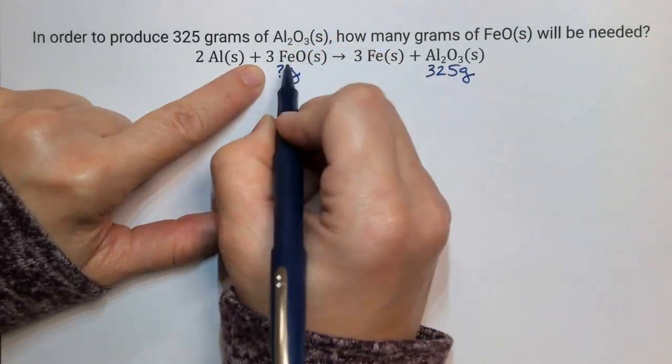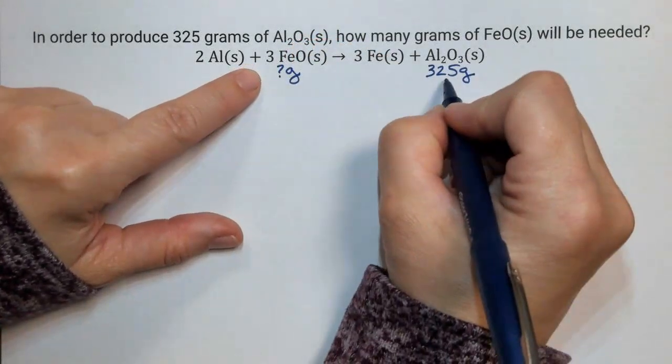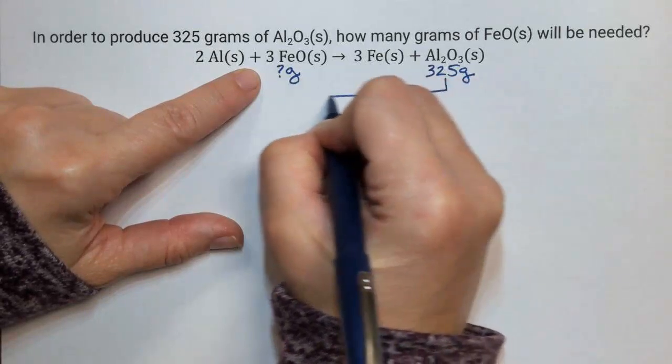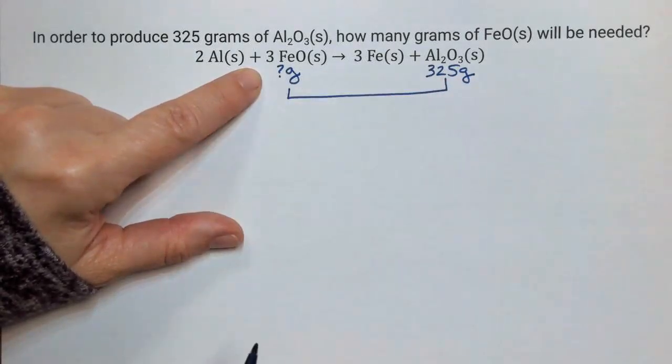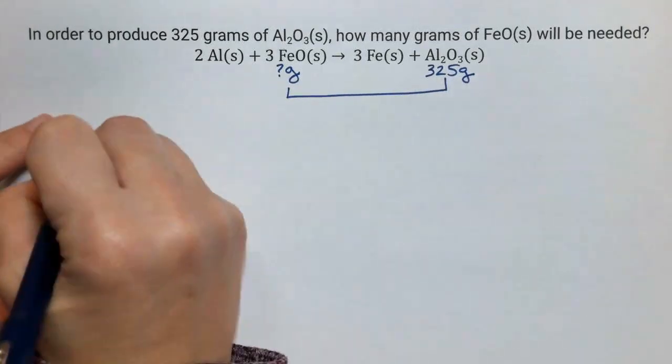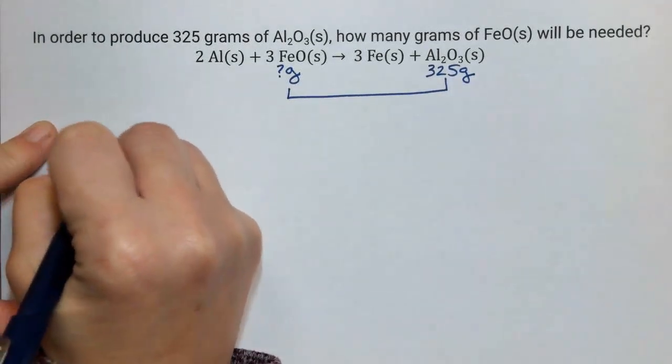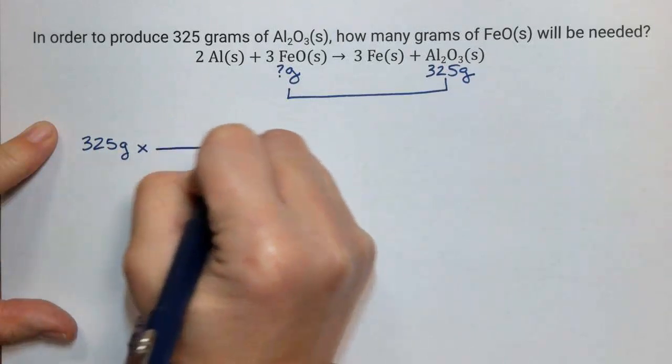will be needed? We are going to use stoichiometry from aluminum oxide to iron oxide. I'm going to take my starting value, 325 grams, times, draw a line,